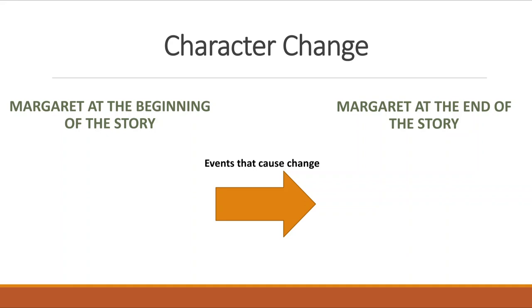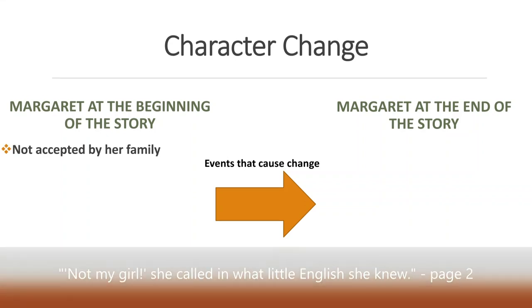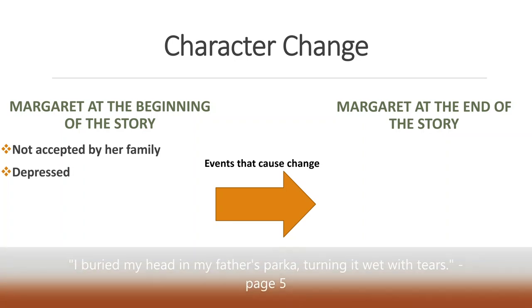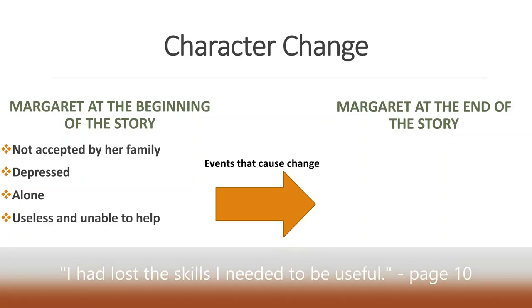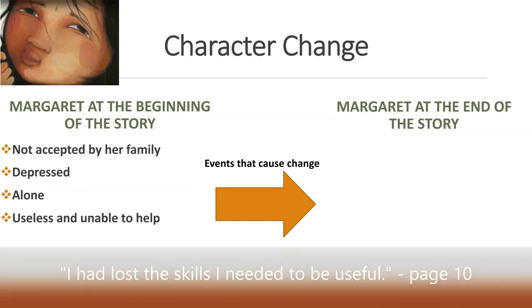Let's answer the first part: what is Margaret like at the beginning of our story? Well, we could say she's not accepted by her family, and we know that based on evidence from the text on page two where her mom is saying 'not my girl.' We could also say that she's sad and depressed — our evidence for that is her crying. We could say she's alone, and our evidence is her saying that she doesn't feel like she's part of the flock, meaning her family. We could also say that she feels useless and unable to help, and we know that because on page 10 she talks about losing the skills she needed.